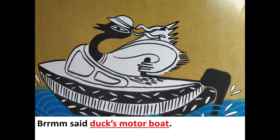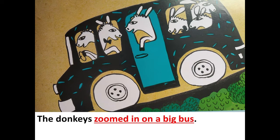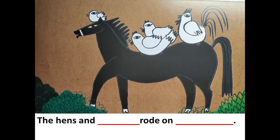'The donkeys —.' The donkeys zoomed in on a big bus. 'The crows took the —.' The crows took the bullock cart. 'The hens and — rode on —.' The hens and — rode on —.